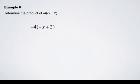Let's use the distributive law to expand -4(-x + 2). First, the -4 multiplies the first term inside the brackets, which is -x.